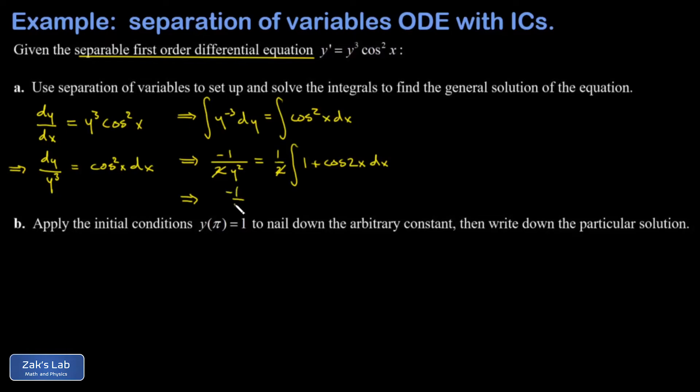I end up with -1/y² = ∫(1 + cos(2x))dx. The integral of 1 is just x, and then the integral of cos(2x) is basically sin(2x) but I need to put a 1/2 out in front to account for what the chain rule does.